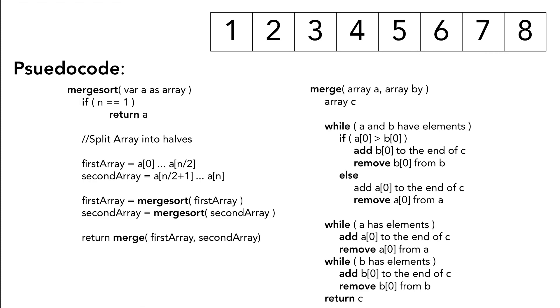Merge sort has a big O of O(n log n) and here is the pseudocode if you need. It consists of two functions: merge sort and merge.